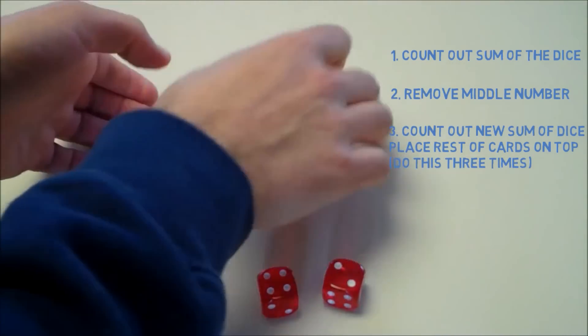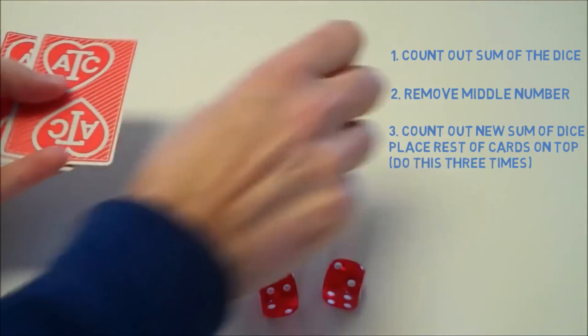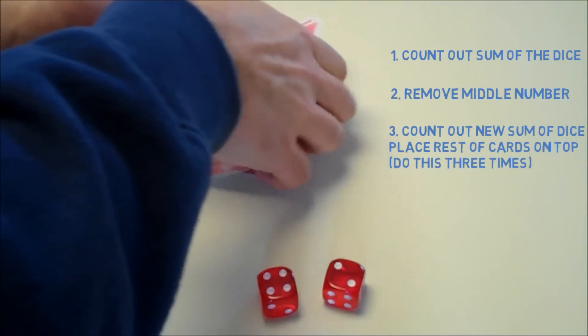We count out six cards again, put the remaining cards on top. And we do this three times. So the third time we count out six cards, and we put the remaining cards on top.